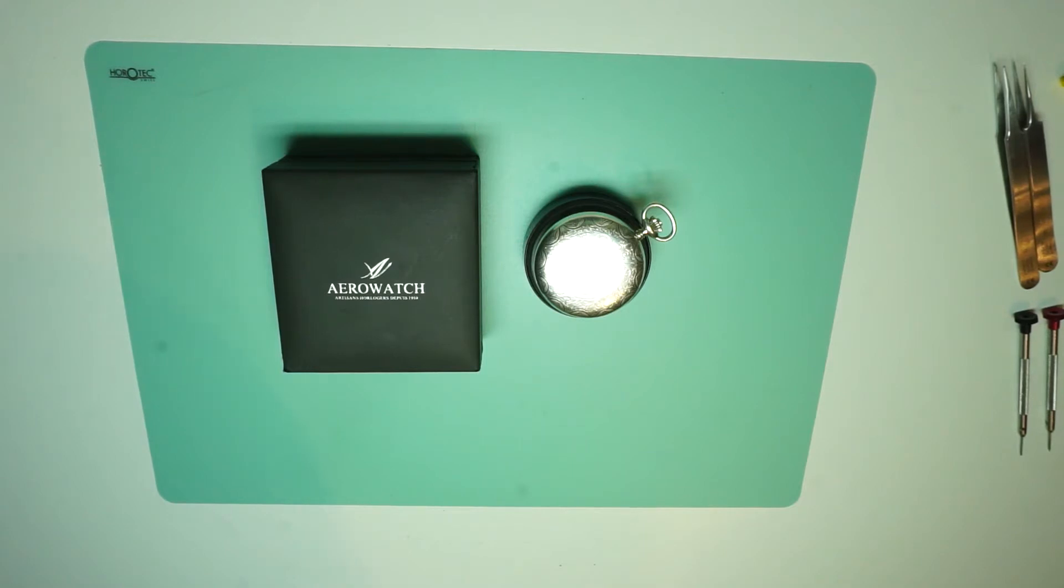So in this first video we're going to look at how we uncase a movement from its casing and also remove the dial and hands, and then we'll move on to the next part of the series as and when that comes up.